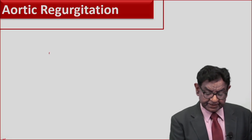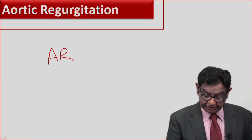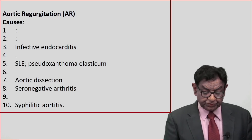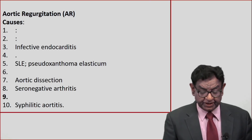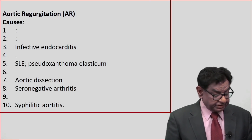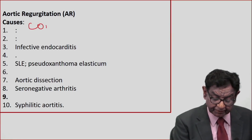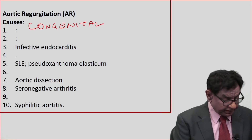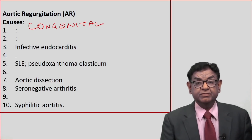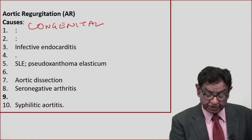Aortic regurgitation, what we write as AR. First of all, we see what are the causes of AR. It could be congenital, or one of the most common causes is rheumatic heart disease.